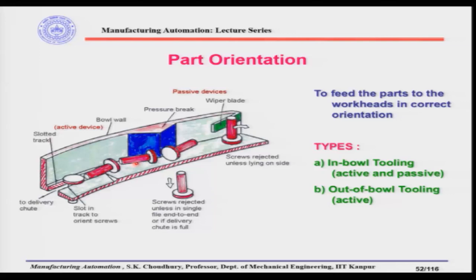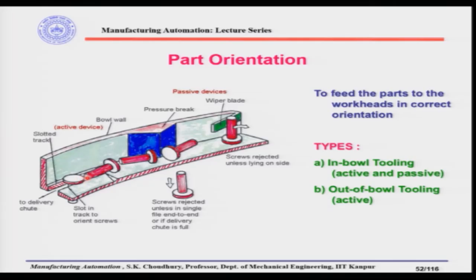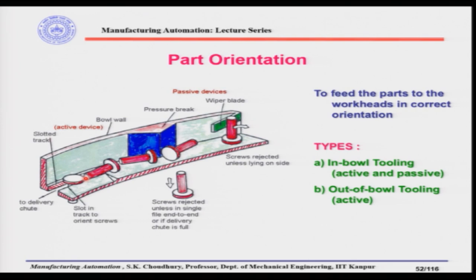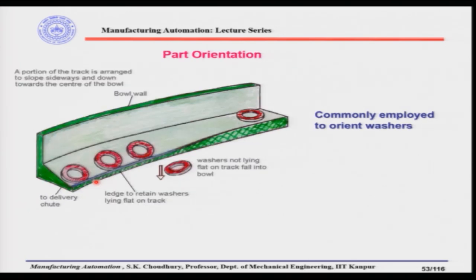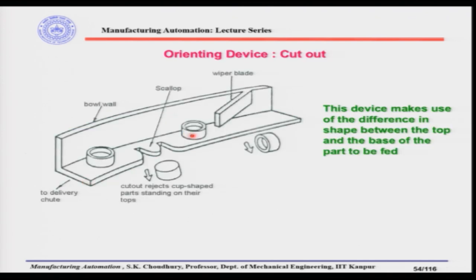The orienting device shape and type should be according to the parts. For headed parts, it is better when they are fed hanging on the head if that is the desired orientation. For washers, only a ledge is sufficient. For parts with a heavier side and an open side, the scallop is very suitable for a part to go through when coming with the closed side or heavier side down.